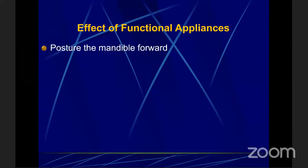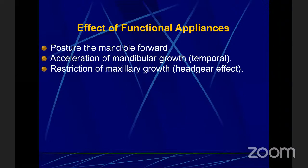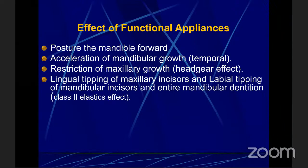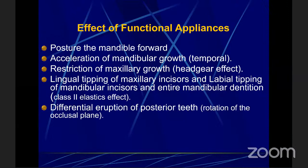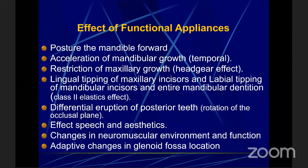What are the effects of functional appliances? They posture the mandible forward and accelerate mandibular growth. They restrict maxillary growth — headgear effect. There is lingual tipping of maxillary incisors and labial tipping of mandibular incisors — like a Class 2 elastics effect. There is differential eruption of posterior teeth: we allow more eruption of lower posterior teeth and restrict eruption of upper posterior teeth. There is rotation of the occlusal plane affecting speech and aesthetics, changes in the neuromuscular environment, and adaptive changes in the glenoid fossa whenever we bring the lower jaw forward.